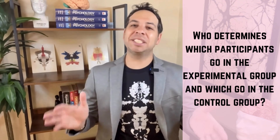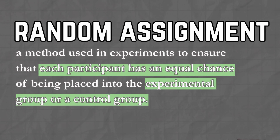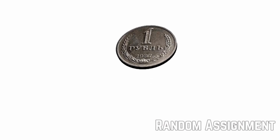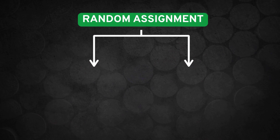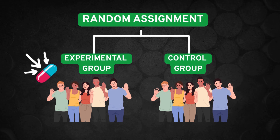Here's a really important question: who decides who gets the real pill and who gets the placebo? The answer is random assignment. Random assignment means that each participant has an equal chance of being placed in either the experimental group or control group. You don't assign them based on who seems more stressed — you let chance decide, like flipping a coin or drawing straws. Random assignment is the unsung hero of experimental research. It helps make sure the two groups are as similar as possible at the start, so if one group feels less stressed, you can say it was probably the pill and not differences in sleep habits or coffee intake.